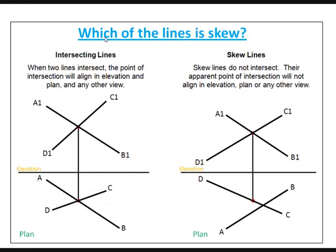Which of the lines is skewed? Intersecting lines: when two lines intersect, the point of intersection will align in elevation and plan and any other view. You can see in the elevation and plan cross lines. These are intersecting because the line vertically pinpoints the intersecting point in both elevation and plan.